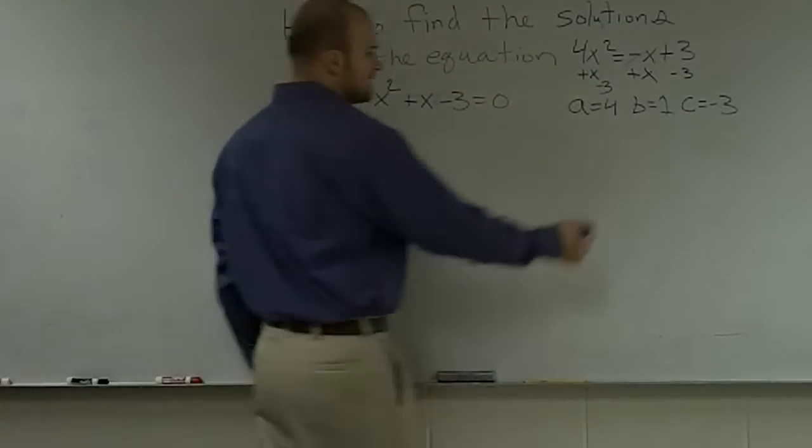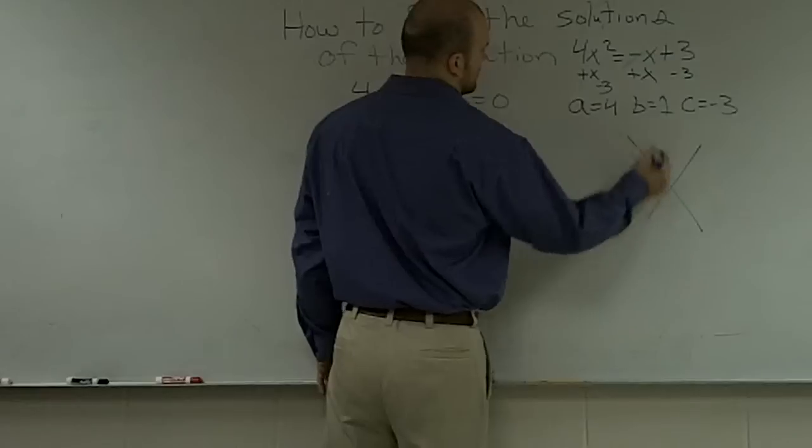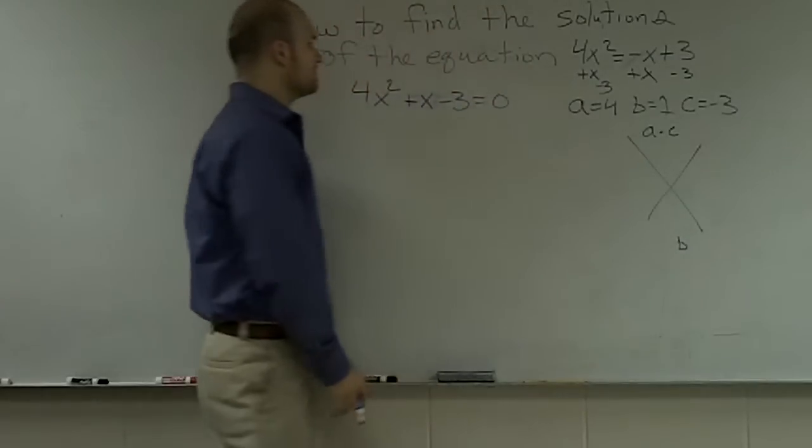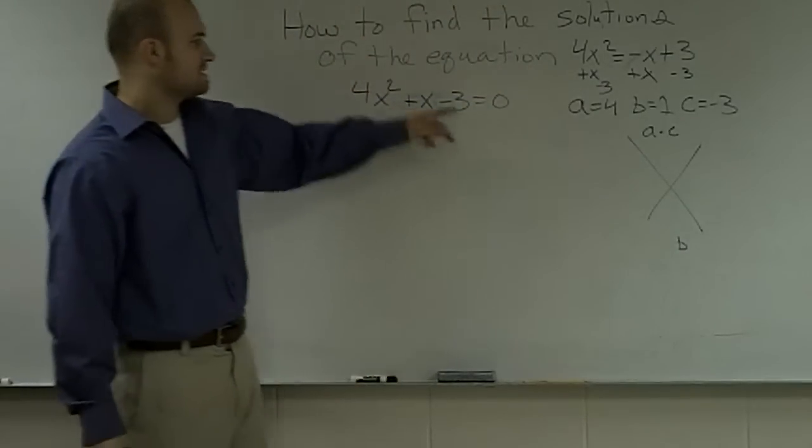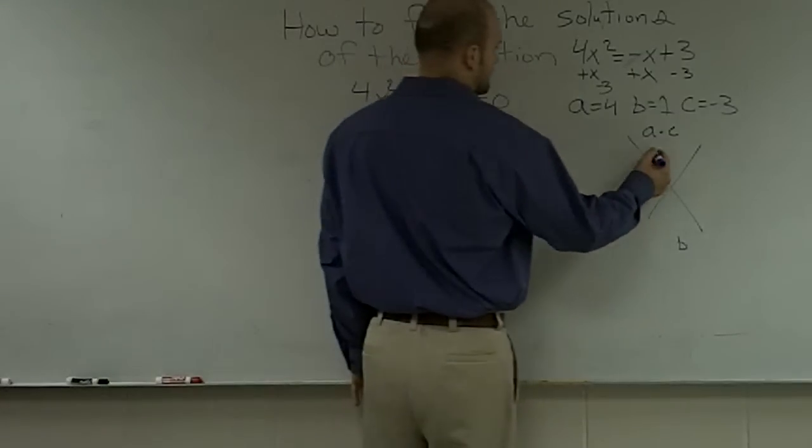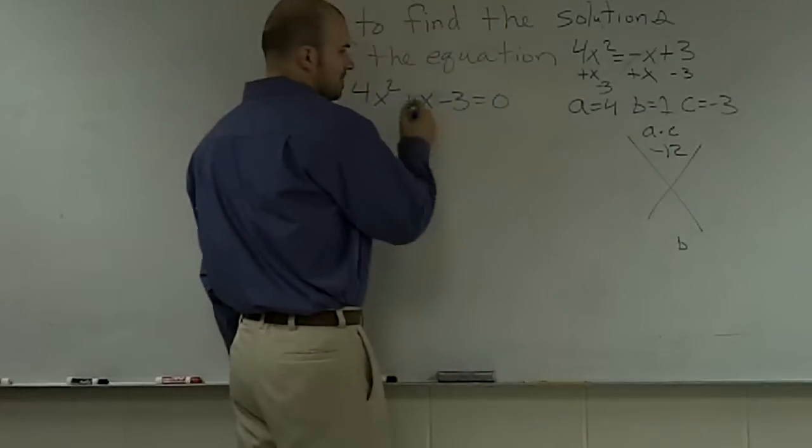So now let's do our a times c and b. We look at a times c, we have 4 times negative 3 is negative 12, and our b is 1.